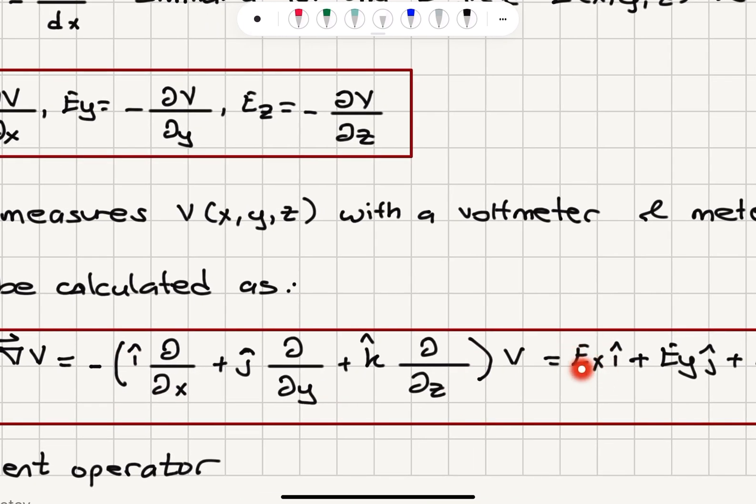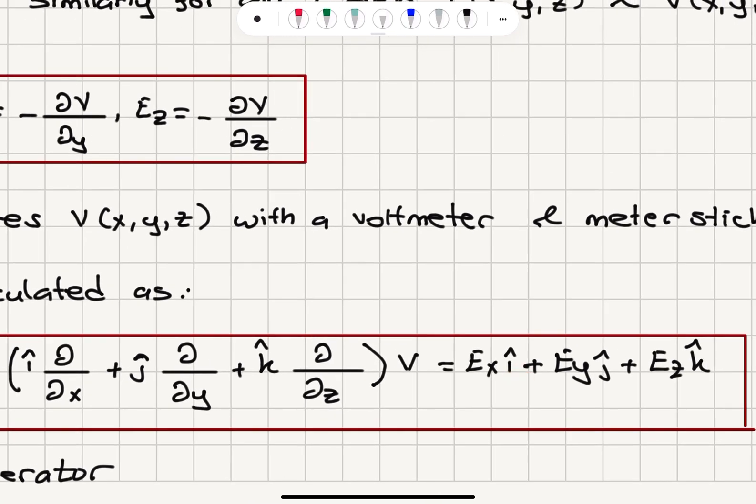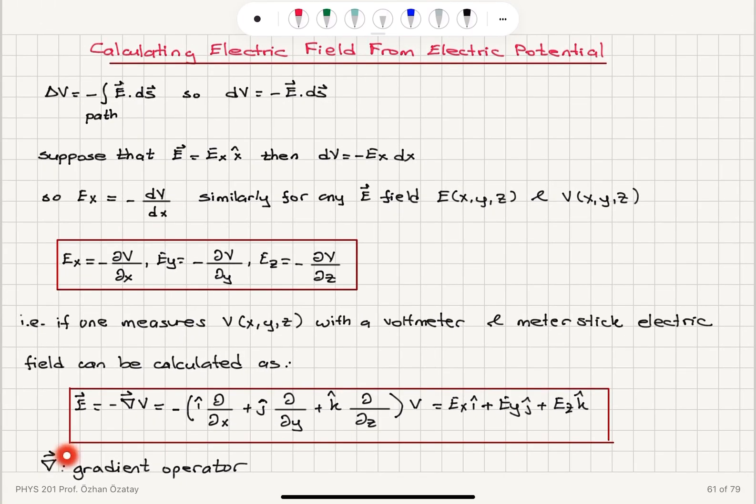This gives us x-component of electric field in i-hat direction, y-component in j-hat direction plus z-component in k-hat direction. So our gradient operator is i-hat del del x plus j-hat del del y plus k-hat del del z.